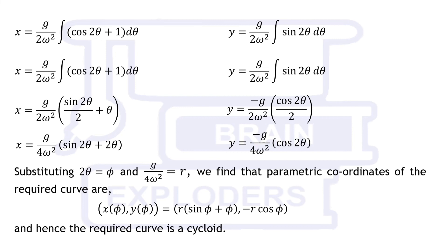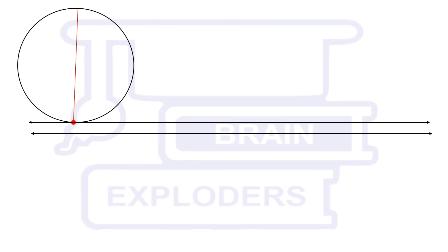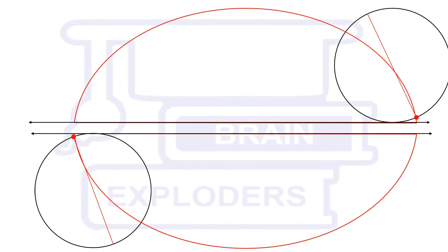Cycloid is the locus of a point on a wheel which is moving on a straight line in any particular plane. Our equation represents a cycloid similar to the lower example shown on the screen.